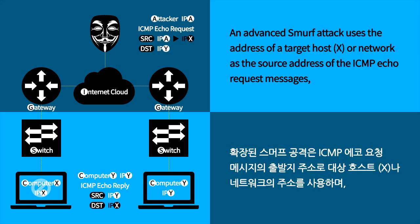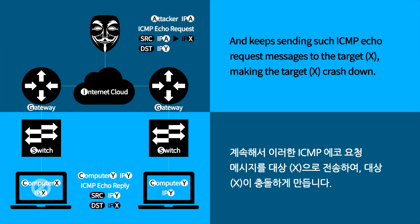An advanced smurf attack uses the address of a target host's network as the source address of the ICMP echo request messages, and keeps sending such ICMP echo request messages to the target X, making the target X crash down.